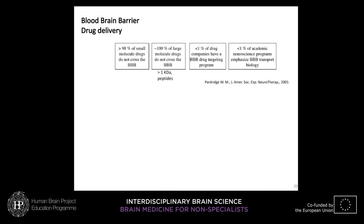As Pardridge described, 98% of small molecules do not cross the blood-brain barrier, and 100% of large molecules — peptides or molecules bigger than one kilodalton — do not cross it. Surprisingly, less than 1% of companies in drug discovery are dealing with blood-brain barrier programs, and the same situation exists in academia. There is a lot to be done here when discovering drugs.